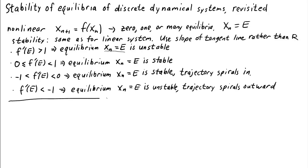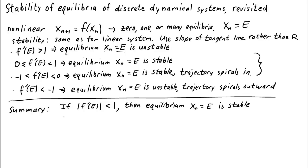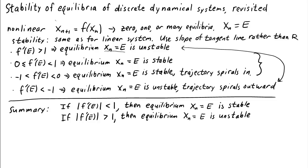We can summarize these results even more simply into two cases. If the absolute value of the derivative |f'(e)| is less than 1, then the equilibrium is stable. On the other hand, if |f'(e)| is greater than 1, then the equilibrium is unstable. So to determine stability for a dynamical system xn+1 equals f(xn), you just need to compute the derivative of f, evaluate it at the equilibrium, and check whether it is greater than 1 in absolute value.